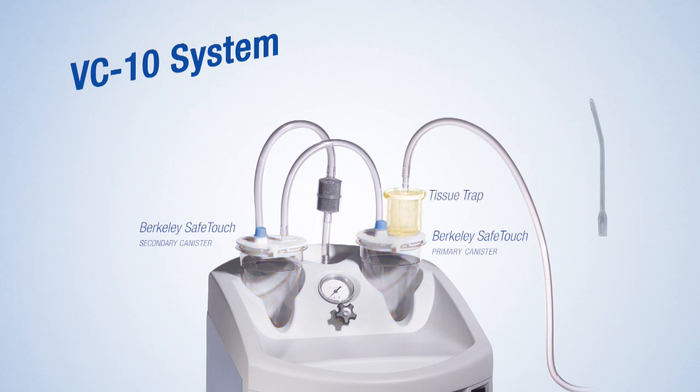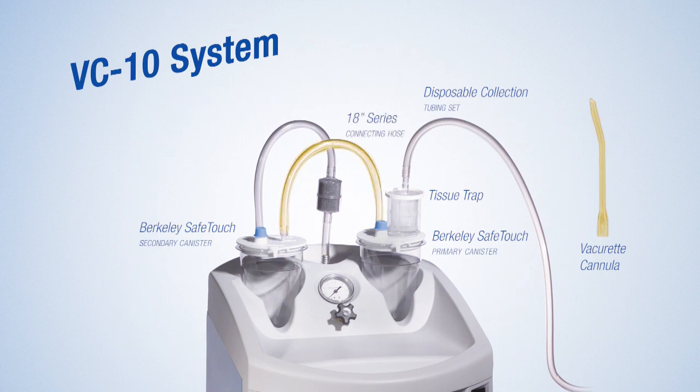The kit includes 5 SafeTouch tissue traps, 5 3.8-inch single-use sterile collection tubing sets with integrated swivel handle and slip ring, 10 8-millimeter curved vacuoret cannulas, 5 18-inch collection canister to canister hose assemblies, one disposal filter assembly, and the instructions for use manual. For additional VC10 products, please refer to the product catalog.